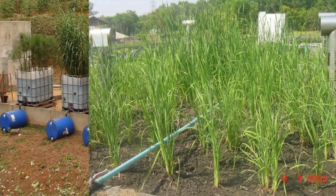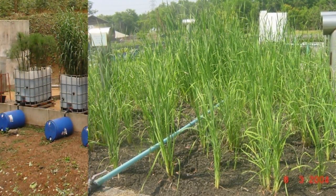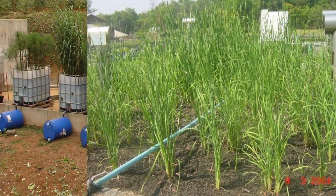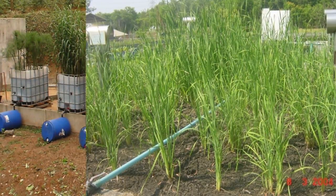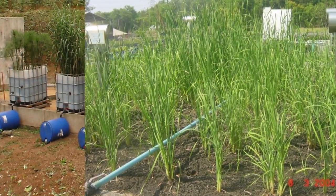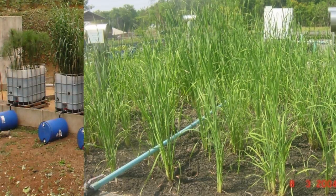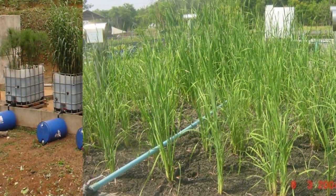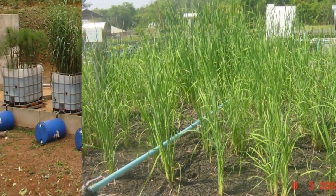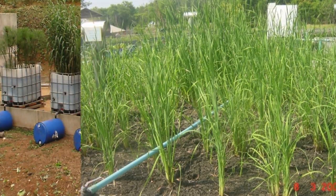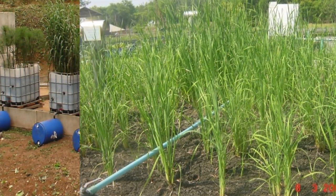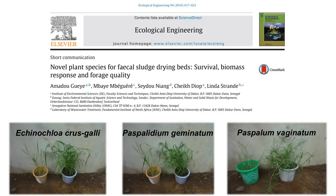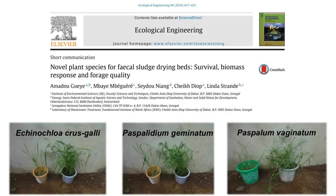In Europe, reeds (or Phragmites) and cattails (or Typha) are the most commonly used plants. In Africa, Asia, and Latin America, indigenous plants are being explored for adaptation, such as antelope grass (or Echinochloa) and papyrus (or Cyperus). An example is this paper identifying three new indigenous species in Senegal that are good candidates for use in planted drying beds.